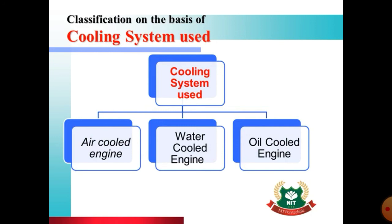In two-wheelers, we commonly use air-cooled engines. The cylinder fins on top of the cylinder come in contact with the air to cool the engine. For four-wheelers, the engine is larger and enclosed under a bonnet, so air cannot easily reach it. Therefore, we use liquid or water-cooled engines, which include a radiator and water pump as part of the cooling system.